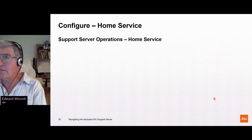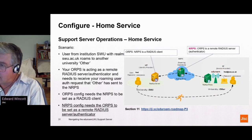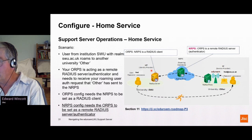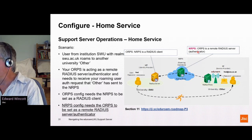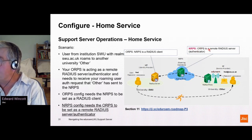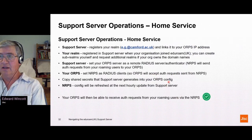Let's look at using the support server to set up your home service. When operating a home service, your roaming users go to another institution and the auth requests are sent back to you from the NERPS. From the point of view of the ORBS, the NERPS is a client sending requests to you. From the point of view of the NERPS, the ORBS is a remote RADIUS server — it's an authenticator.